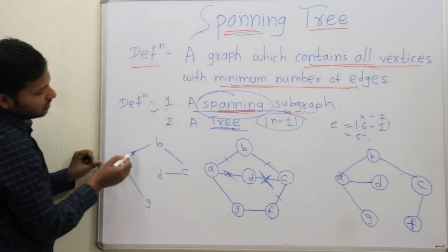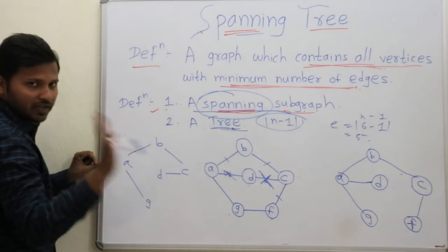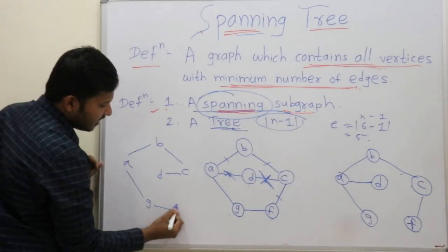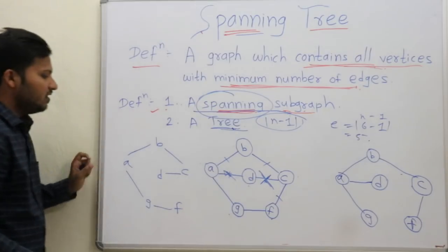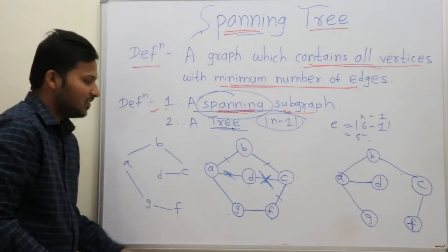How many edges are over? 1, 2, 3 and 4. One more edge is needed. So take G, F. This is another spanning tree.